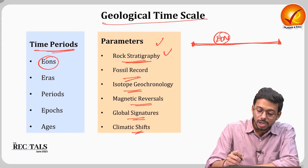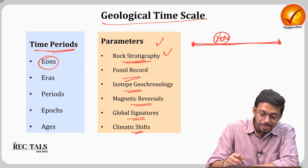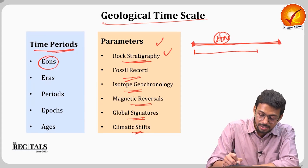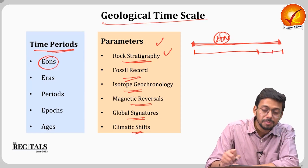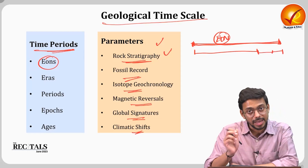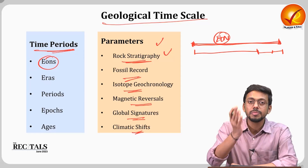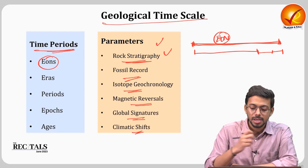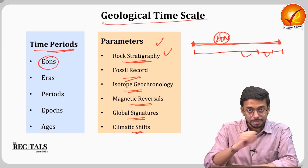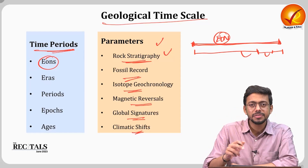If we consider climate shifts, eons are the largest periods. Within eons we have eras. Eras are based on specific parameters that make them distinct from one another.